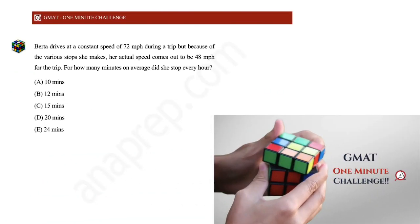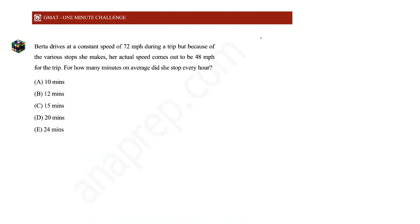How to solve it in one minute: she drives at 72 mph and she stops, and at that time her speed is 0 mph. Together, her total speed comes out to be 48 mph. This makes me think of weighted averages.